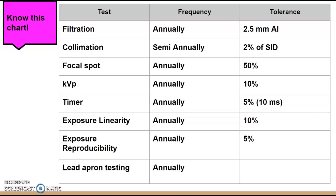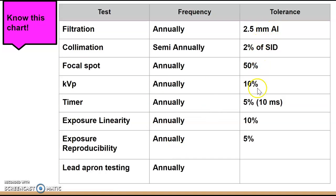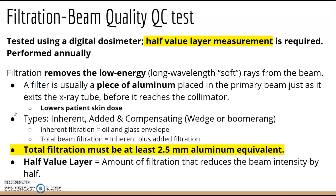This chart covers what you need to know: the test, how often it's tested, and the tolerance percentage — make definite flashcards for these. Filtration looks at beam quality; it's tested using a digital dosimeter to measure the half value layer, and it's performed annually. Filtration removes low energy or soft rays from the beam — typically a piece of aluminum placed on the outside of the tube — and it lowers patient skin dose.